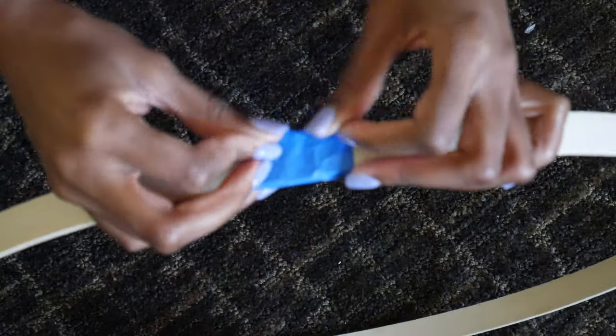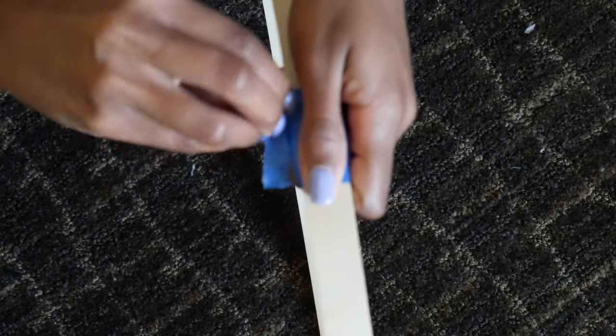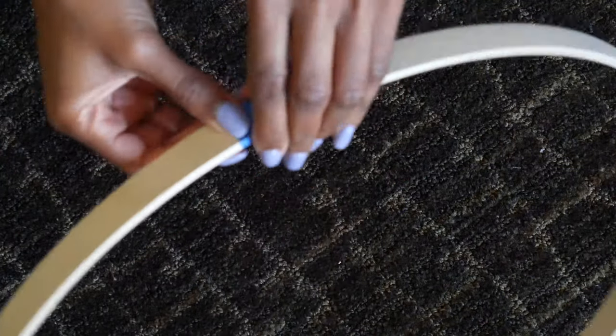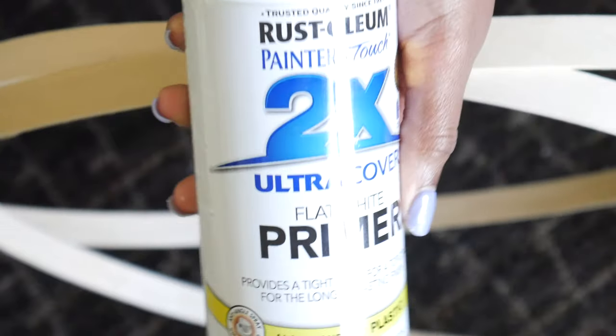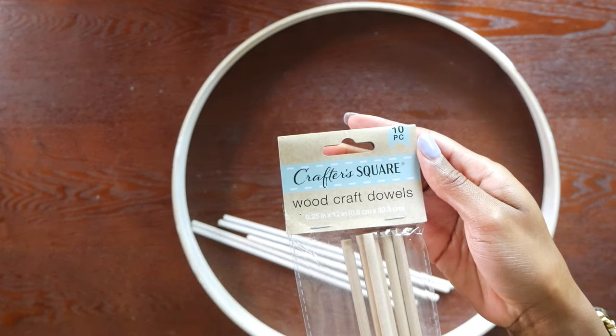We're gonna start off with an embroidery hoop. Mine is 18 inches. Get two and use the two inner loops so you don't have to go through the pain of resizing, because you can resize it down but the shape will not be the same.